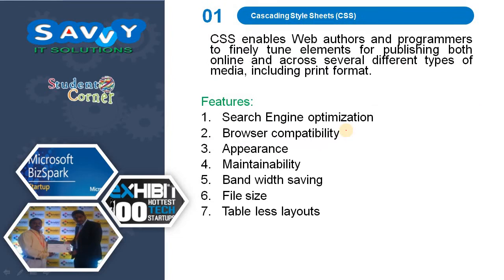Cascading Style Sheets, also called CSS, enables web authors and programmers to fine-tune elements for publishing both online and across several different types of media including print format. The features of CSS include: search engine optimization, browser compatibility, appearance, maintenance, bandwidth saving, file size, and tableless layouts.